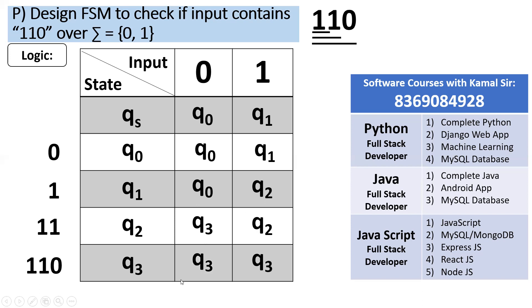Do you not change the state? Yes, once you get 110. Because the question is not ends with sir, the question is contains. Qs is the start state, Q3 is the final state, and this is the minimization.